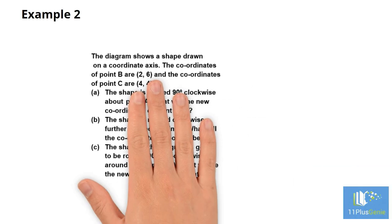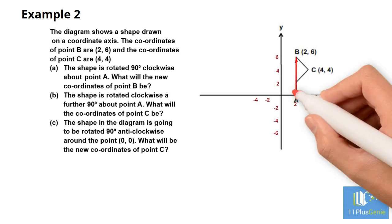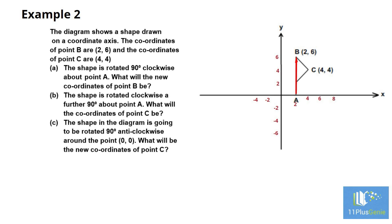Example 2: The diagram shows a shape drawn on a coordinate axis. The coordinates of point B are (2, 6) and the coordinates of point C are (4, 4). The safest will be to roughly fill in the coordinates of the X-axis and the Y-axis. Part A: The shape is rotated 90 degrees clockwise about point A. What will the new coordinates of point B be? From point A, we draw an arrow to point B. Now we rotate this arrow 90 degrees clockwise about point A. After the rotation, point B will have an X value of 8 and a Y value of 0. The new coordinates are (8, 0).